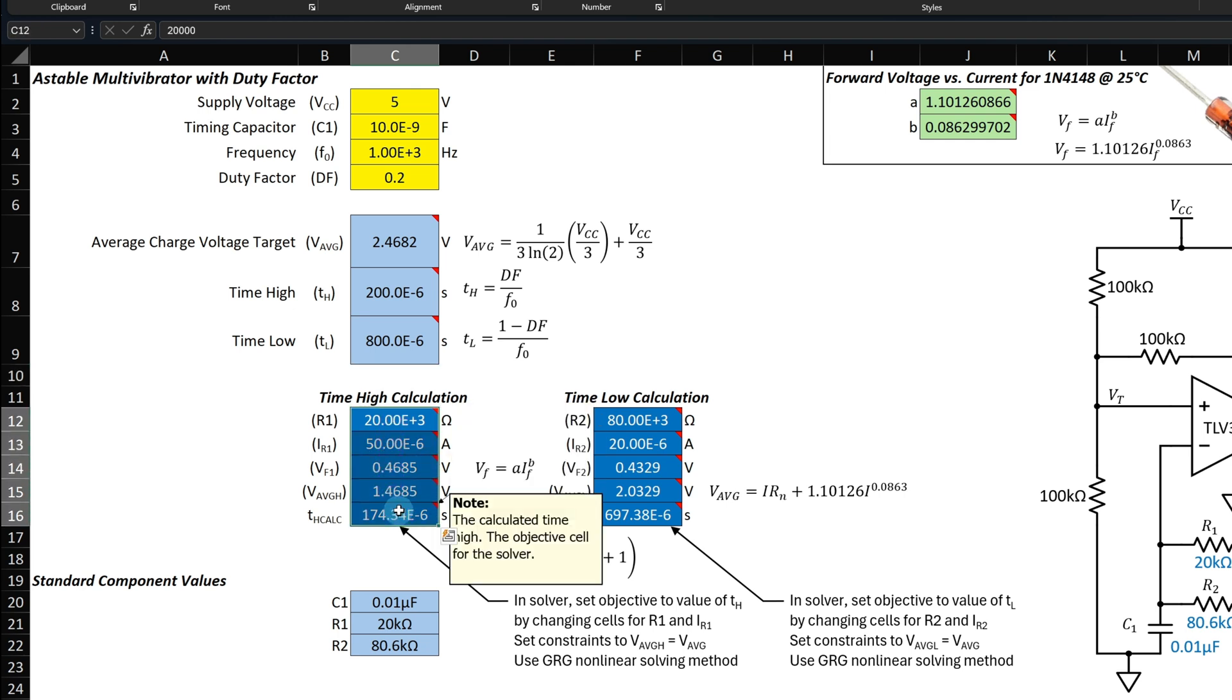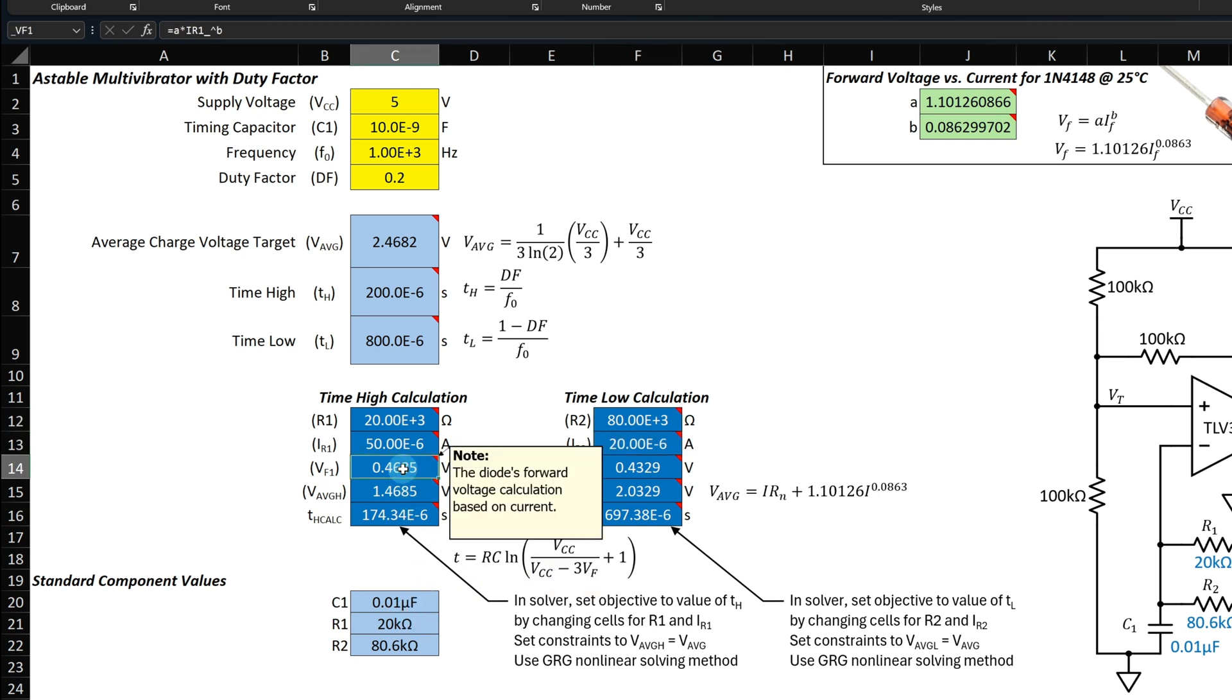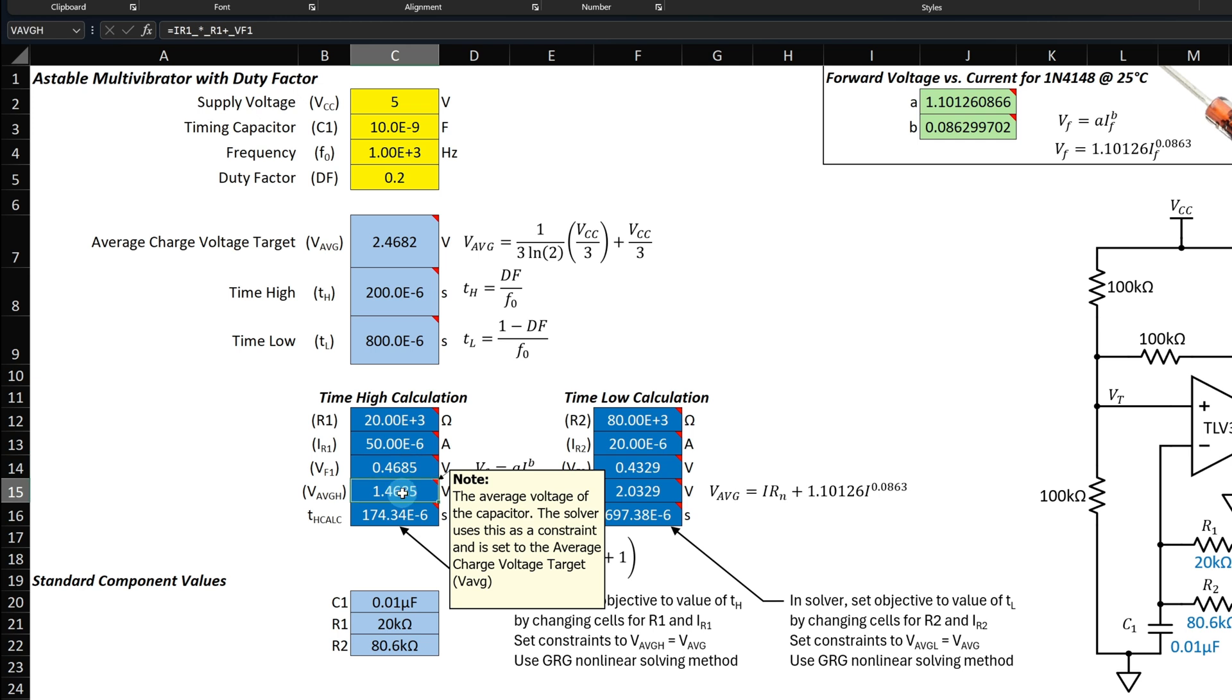I created a new cell style called unprotected outputs. Although these are calculated outputs, the solver will need to adjust these cells so they must not be protected. I put in approximate values for the resistors and their currents. Consider them to be the seeds for the solver. The forward diode voltage is calculated with the diode equation and the average capacitor voltage is calculated with this formula. Standard component values are calculated here and used in the schematic.